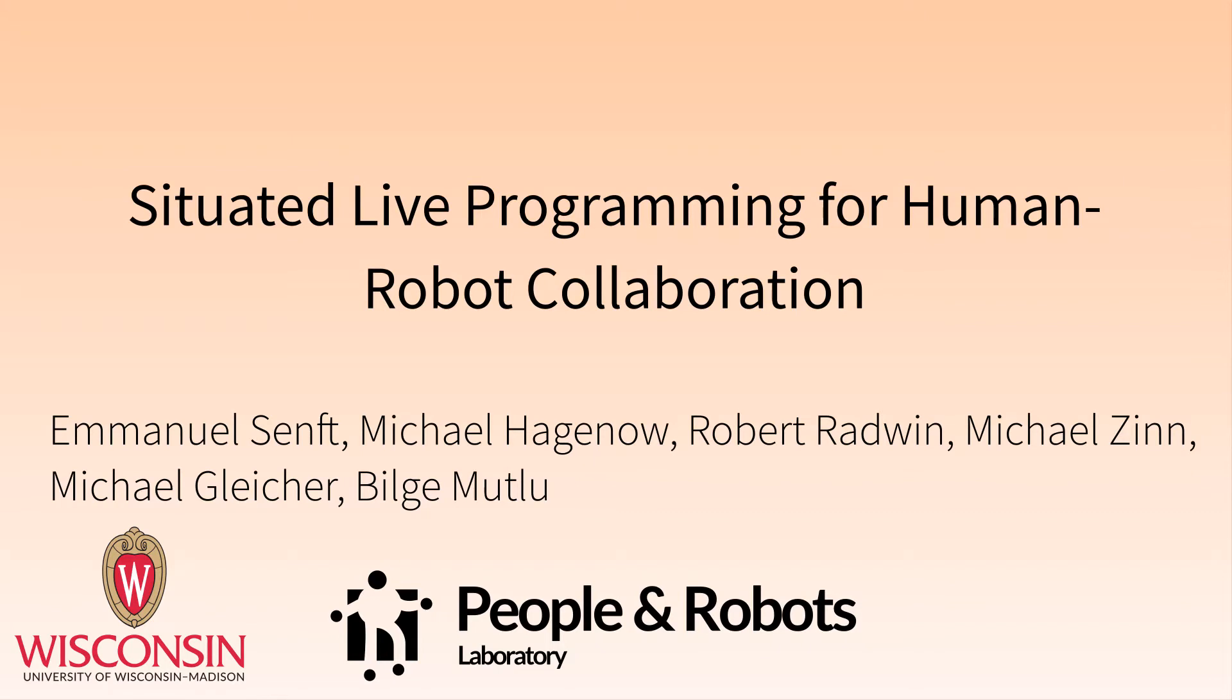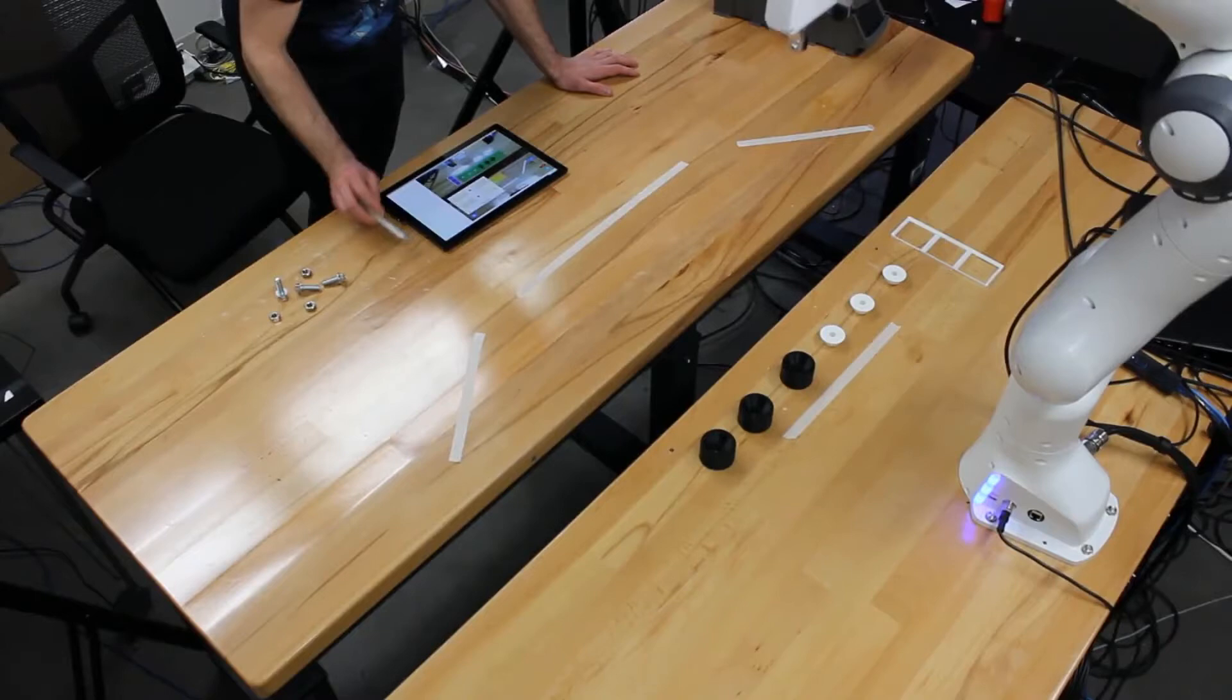Situated live programming is a method that allows end users to create robot behaviors for collaboration. Consider the following assembly task.